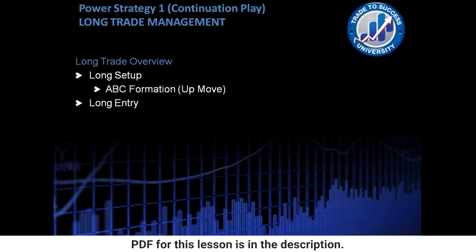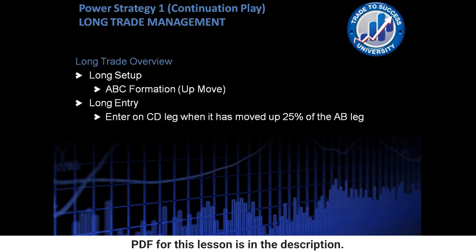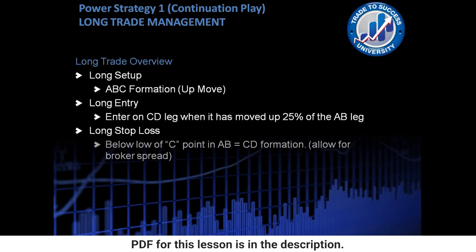We know that the long entry is entry on the CD leg when it has moved up 25% of the AB leg. The long stop loss is below the low of point C on the AB equals CD formation.